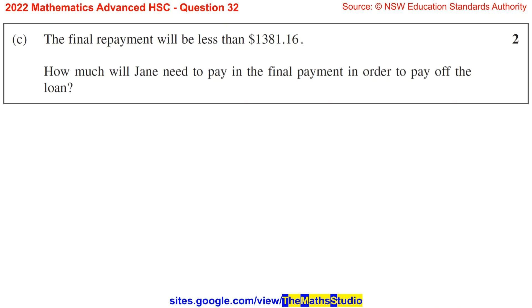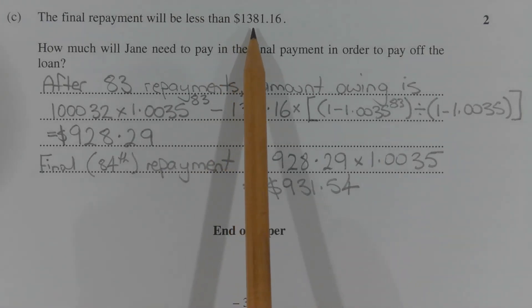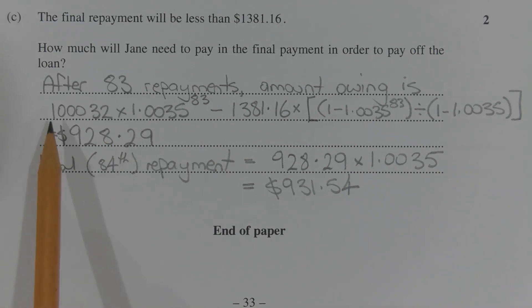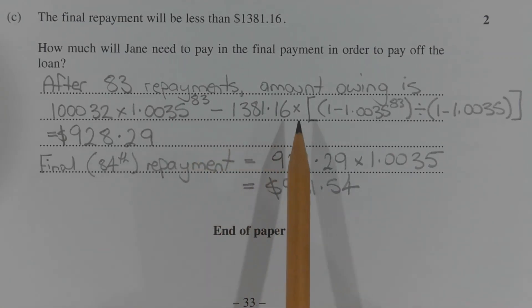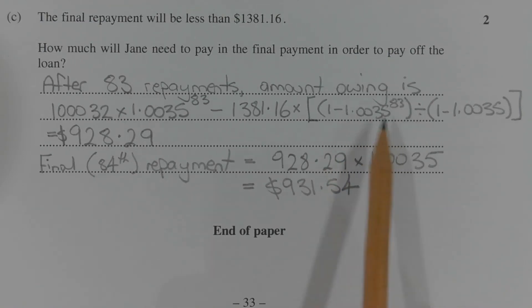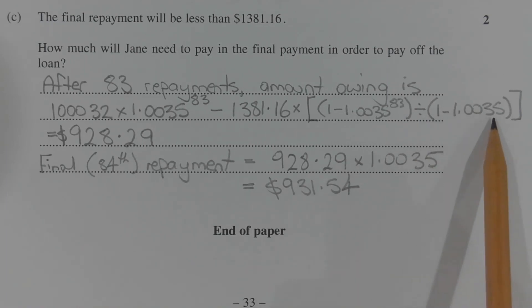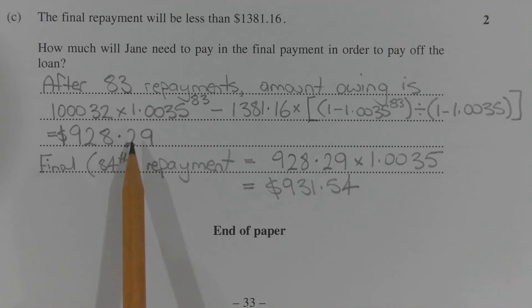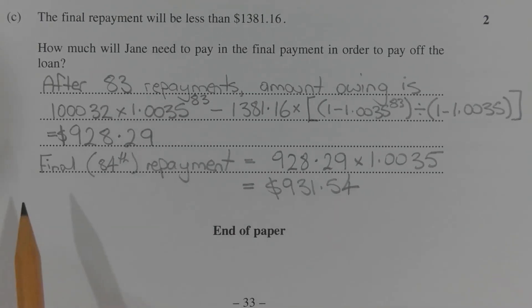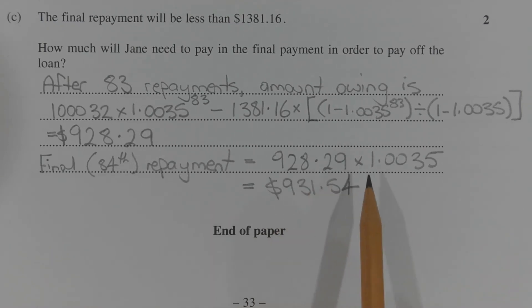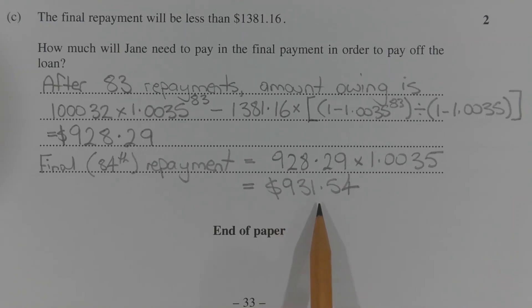Part C. The final repayment will be less than $1,381.16. How much will Jane need to pay in the final payment to pay off the loan? After 83 repayments of $1,381.16 have been made, the amount owing is given by 100,032 times 1.0035 to the power of 83 minus 1,381.16 times 1 minus 1.0035 to the power of 83 in brackets divided by 1 minus 1.0035, which equals $928.29. To get the final repayment, we add one more month's interest: $928.29 times 1.0035, which equals $931.54.